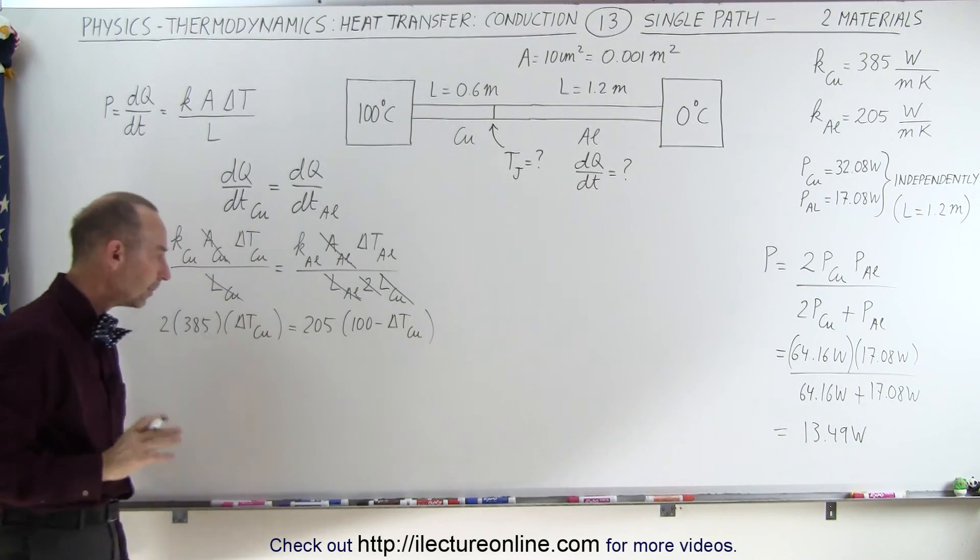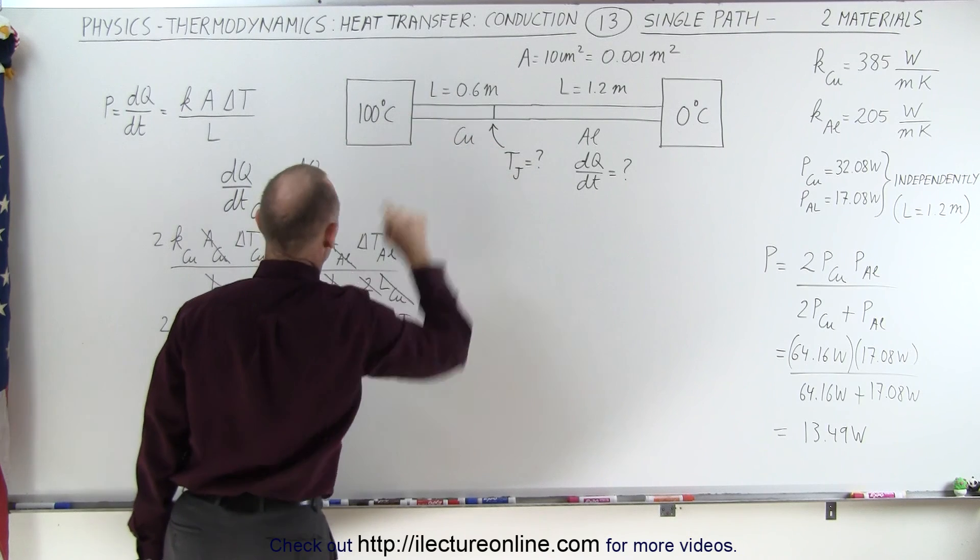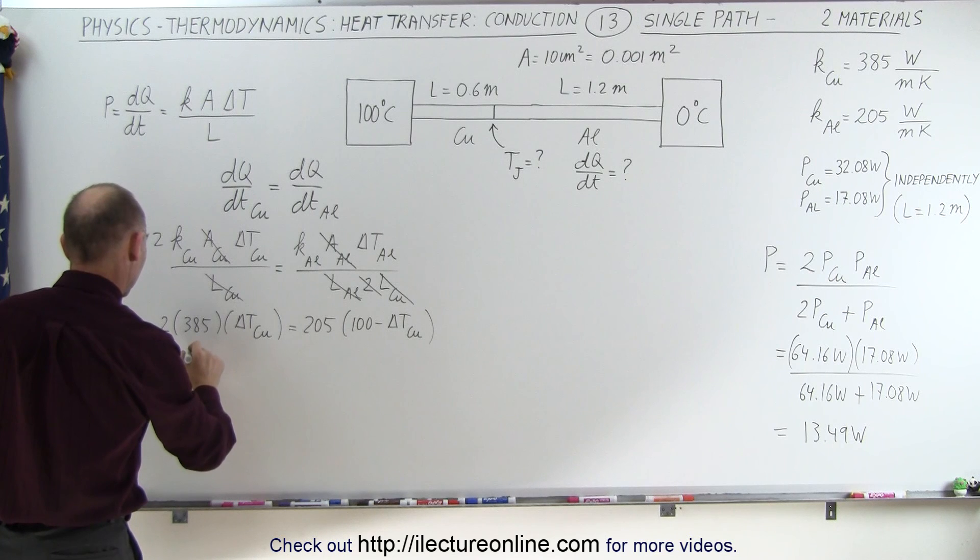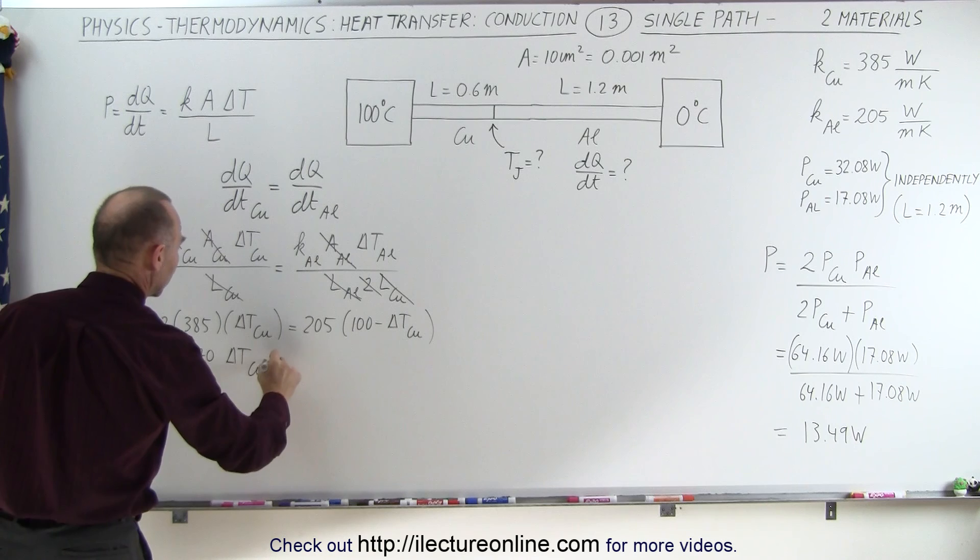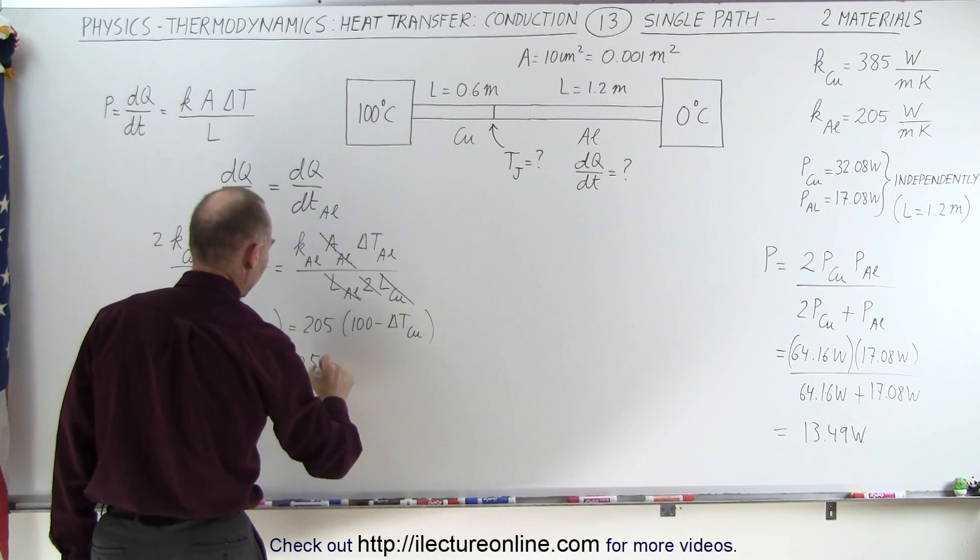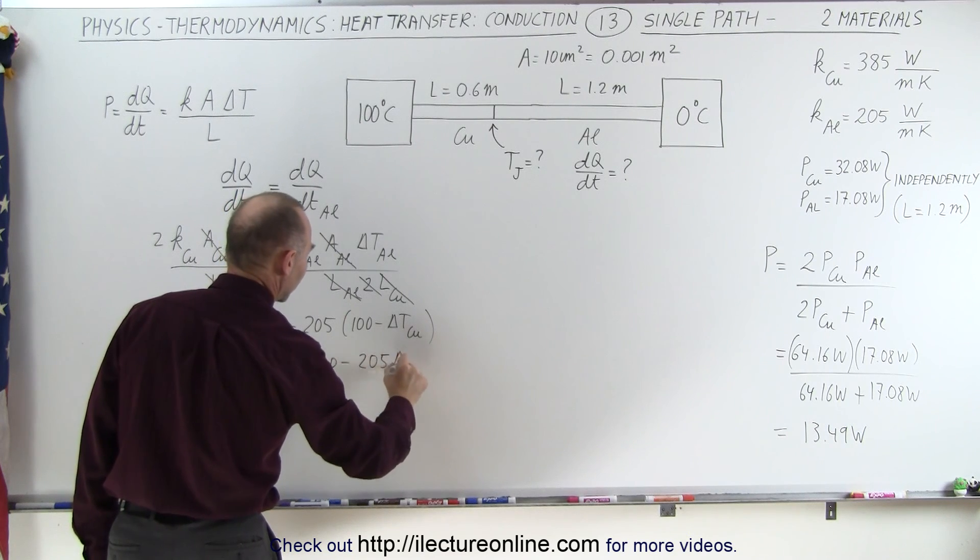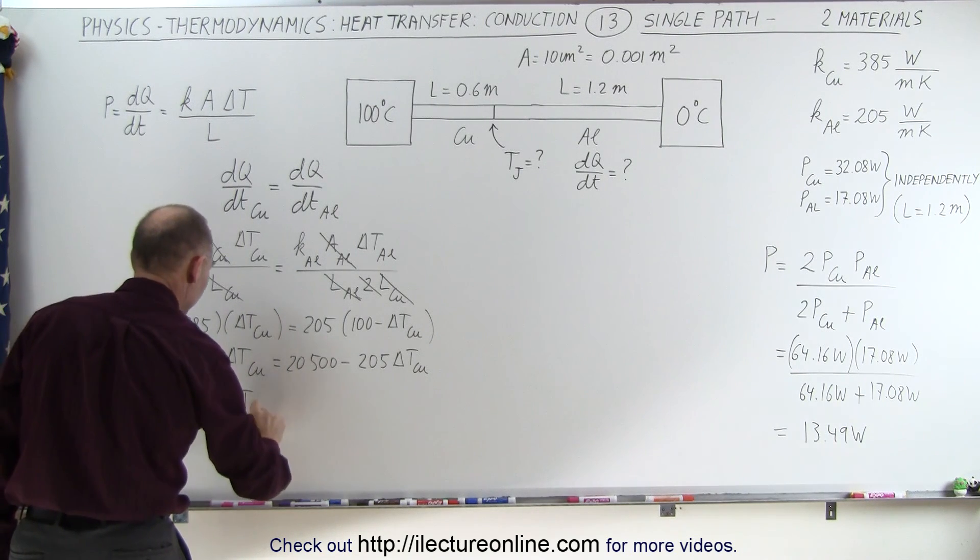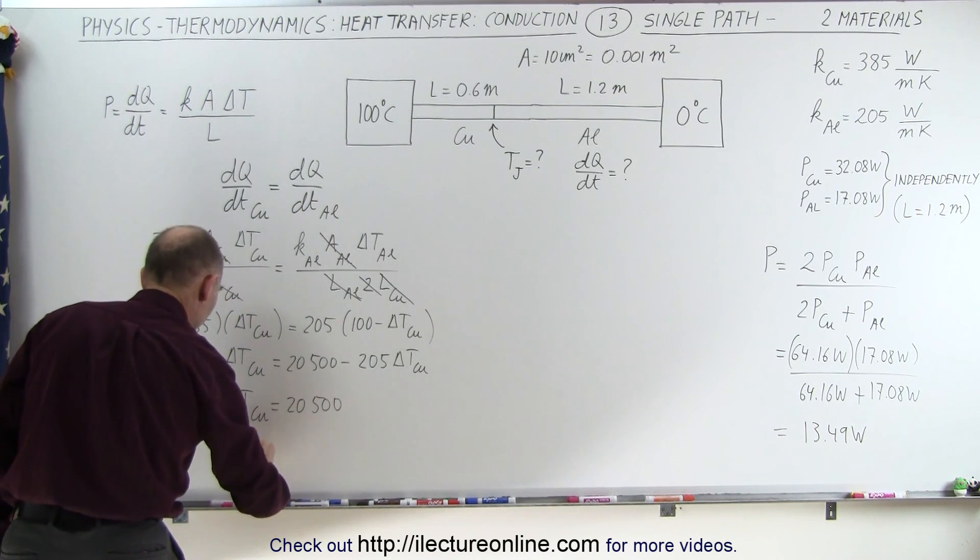Because whatever this is, you subtract it from 100 and you get this. Now we only have the one unknown, the difference in the temperature on the copper section here. So how does that work? Well, we can write this as 770 times the delta T for the copper is equal to 20,500 minus 205 times the delta T for the copper. Now we move this to the other side, we add that, we get 975 times the delta T for the copper is equal to 20,500, which allows us to calculate the difference on the copper section in the temperature.